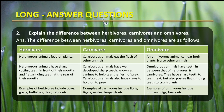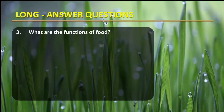Examples of herbivores include cows, goats, buffaloes, deer, and zebra. Examples of carnivores are lions, tigers, eagles, and leopards. Omnivores include human beings, pigs, and bears. So these are the differences between herbivores, carnivores, and omnivores. Let us see the third question: What are the functions of food?